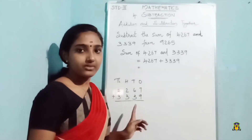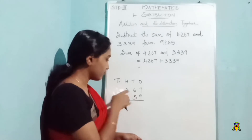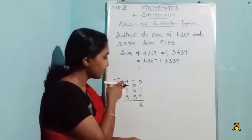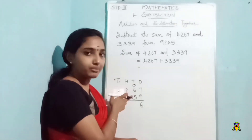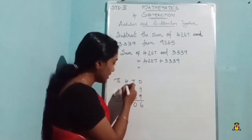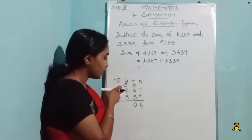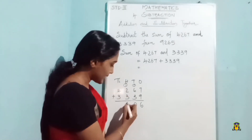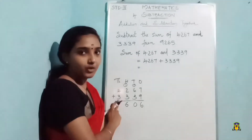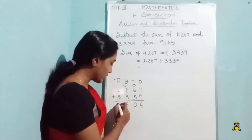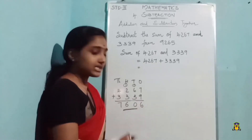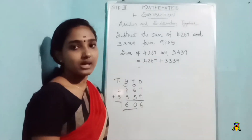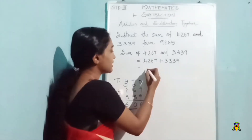On adding 4267 and 3339: 7 plus 9 is 16, writing 6 and carrying 1. In tens place, 1 plus 6 is 7, plus 3 gives 10, writing 0 and carrying 1. Then 1 plus 2 is 3, plus 3 gives 6. In thousands place, 4 plus 3 is 7. So we got the sum as 7606.